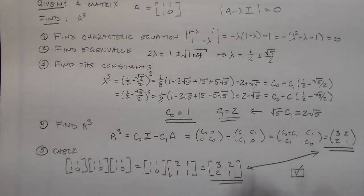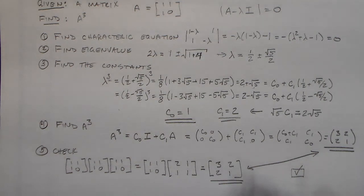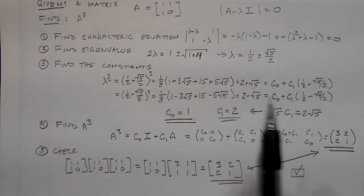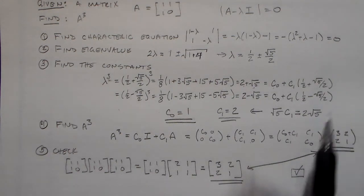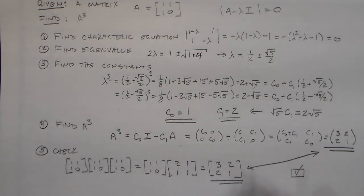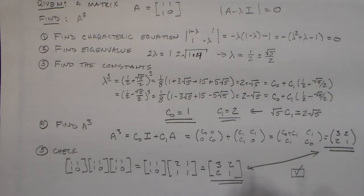Remember, if you're doing the three-by-three matrix, you have an additional constant C₂ multiplied by lambda squared, and you'll have to multiply C₂ times A squared when you do that one. Just the same thing, only a little bit more work. Have fun, and I will see you around. Bye now.